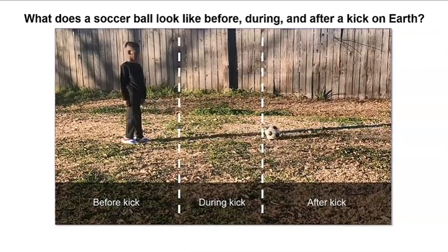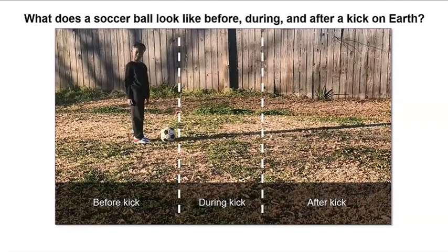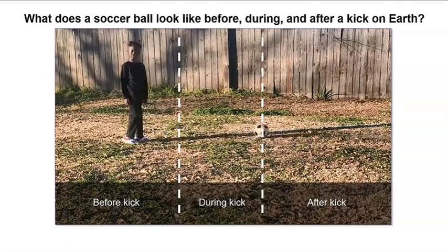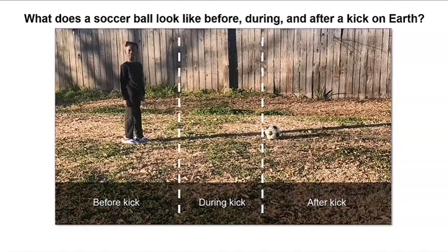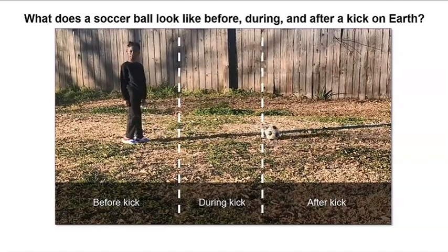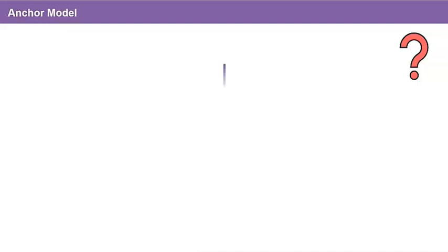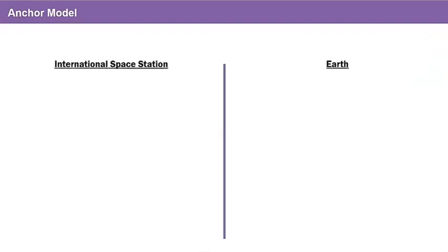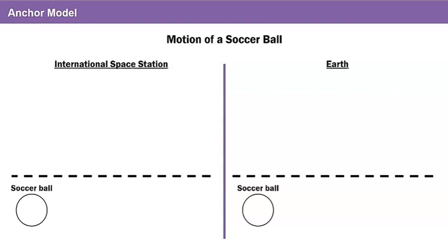But first, I have another question for you. What do you think a soccer ball looks like before, during, and after a kick in space? Let's see if we can figure this out. How should we design our models of these two systems: the international space station and earth? What components do we need in each system to show the motion of a soccer ball? If we're playing soccer, we need a soccer ball in each model, and we need a foot to kick it.